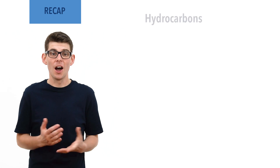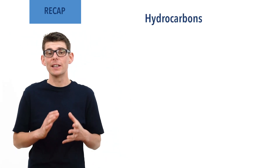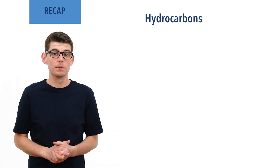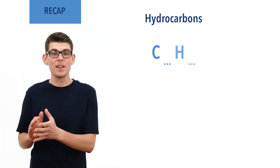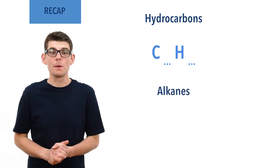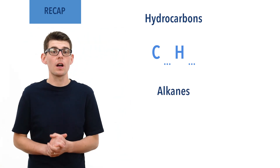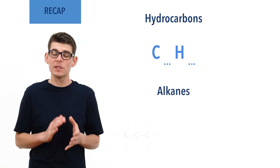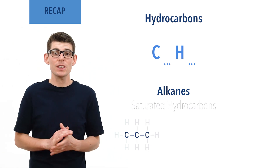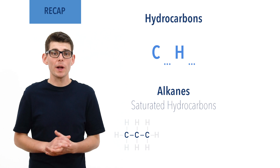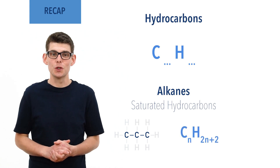Before we talk in detail about the combustion of alkanes, there are a few essential ideas you need to be comfortable with. Hydrocarbons are compounds that contain only carbon and hydrogen atoms — they all have a molecular formula of CₙHₙ. Alkanes are a type of hydrocarbon in which all the carbon atoms are bonded together with single carbon-carbon bonds. They are referred to as saturated hydrocarbons and all have the formula CₙH₂ₙ₊₂.